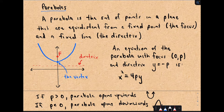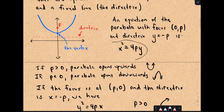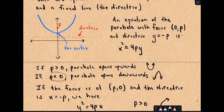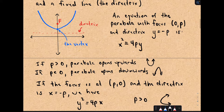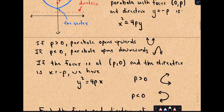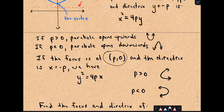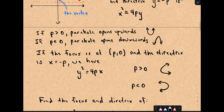An equation of the parabola with a focus at the point (0, p) and directrix y equals negative p is x² = 4py. If your p value is positive, the parabola opens upward; if p is negative, it opens downward. Parabolas can also open left or right. If the focus is at (p, 0) and the directrix is x equals negative p, the form is y² = 4px. If p is positive it opens to the right; if negative, it opens to the left.